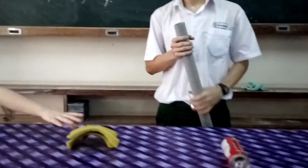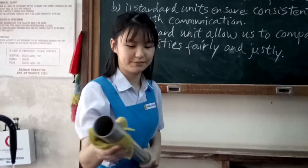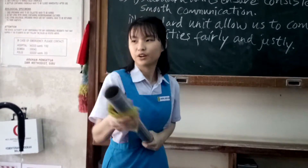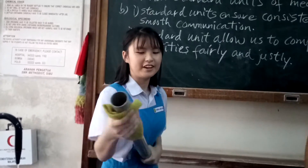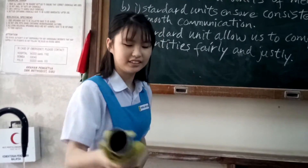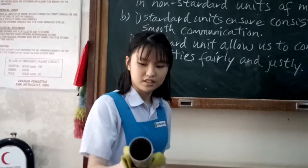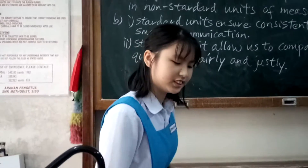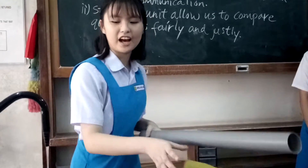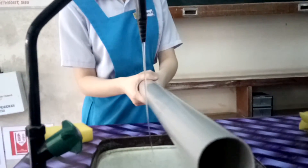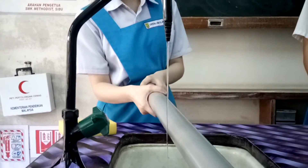Let's move to the next experiment. I am keep rubbing this PVC pipe. When I rub the sponge against this PVC pipe, the charge of the sponge will transfer to the PVC pipe. Therefore the PVC pipe is charged up, so it can attract the water. Let's see how it is. Now the water is curved to the right and it does not flow straight anymore.